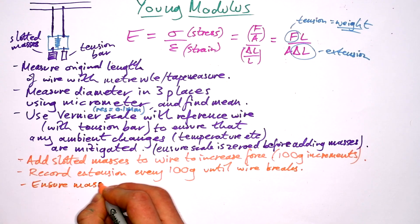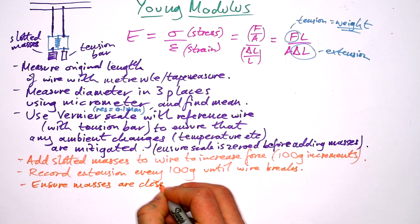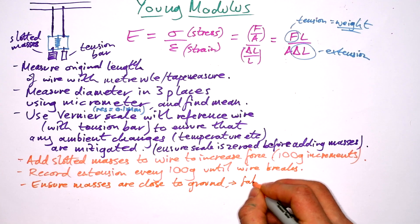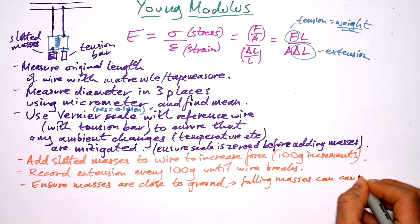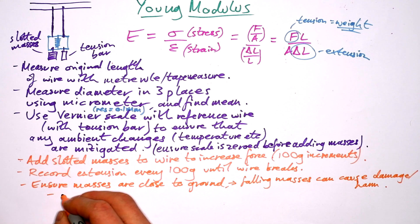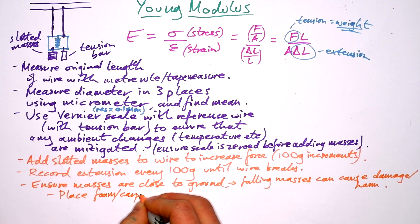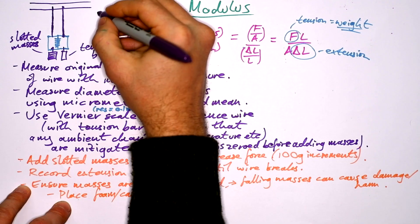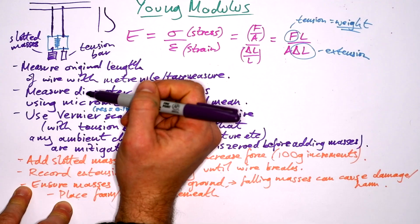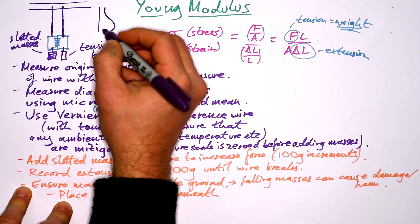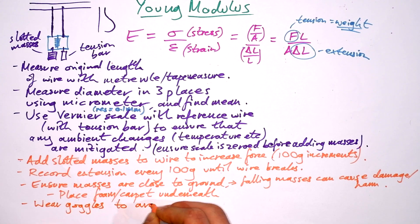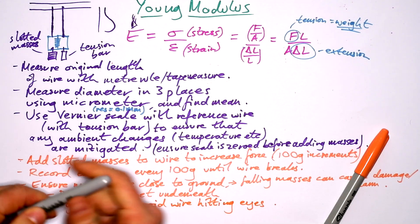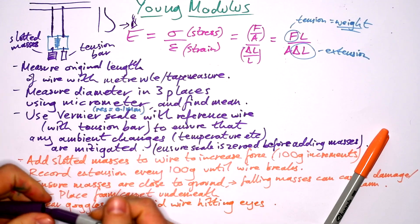Safety, well, ensure masses are close to the ground. And that's because falling masses, when the wire breaks, can cause damage or harm. On that note, we can put foam or carpet underneath because when your wire snaps, there's a fair amount of energy in there. So it could actually send the wire going flying into your eye. So we say wear goggles to avoid wire hitting eyes. You don't want the wire going bang into your eye like that.